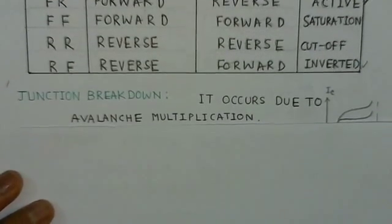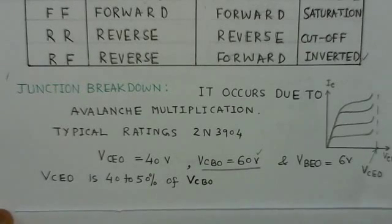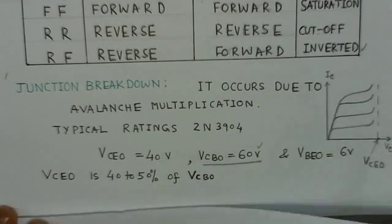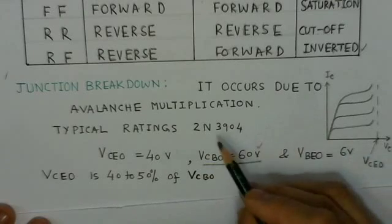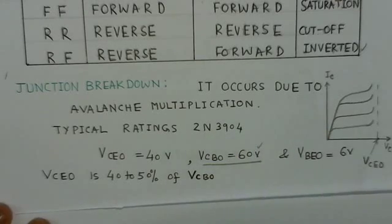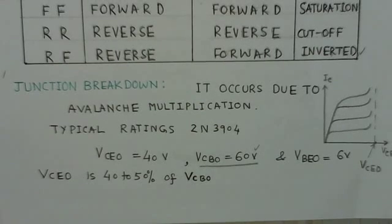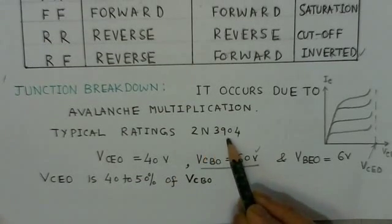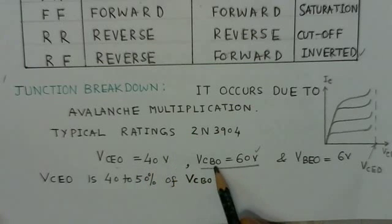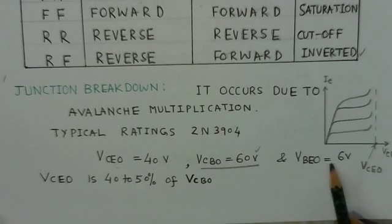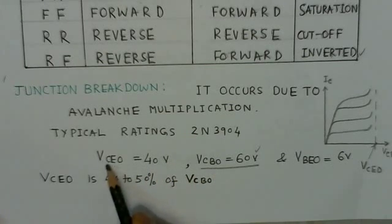Now we see about the junction breakdown. This junction breakdown occurs due to the avalanche multiplication, as we know. We have seen in the case of the diodes also that it takes place because of the avalanche multiplication. Typical ratings for a transistor here are given: 2N3904, VCEO 40V, VCBO 60V, and VEBO 6V.